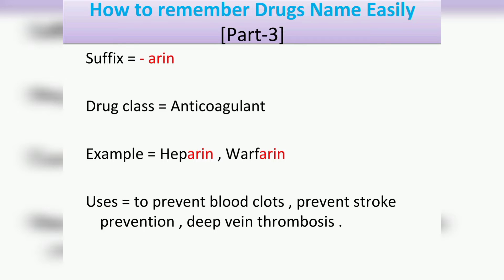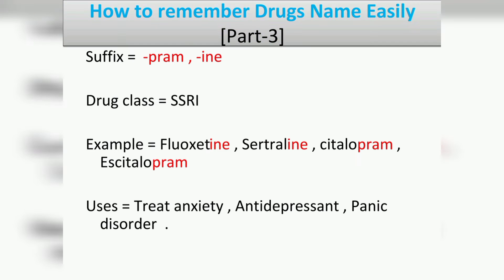The next suffix is '-arine', which belongs to the drug class anticoagulants. Examples include heparin and warfarin. The uses of anticoagulants are to prevent blood clots, prevent stroke, and treat deep vein thrombosis.